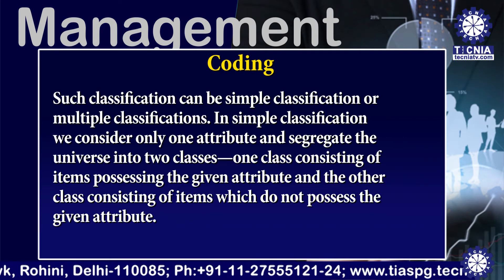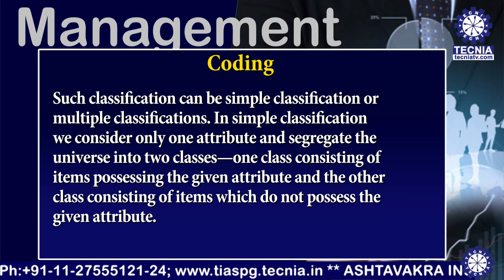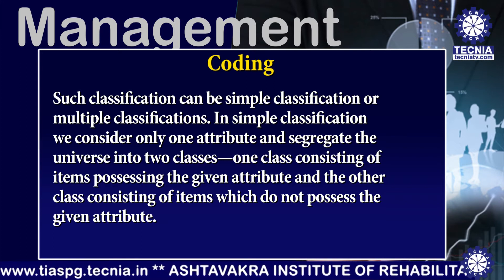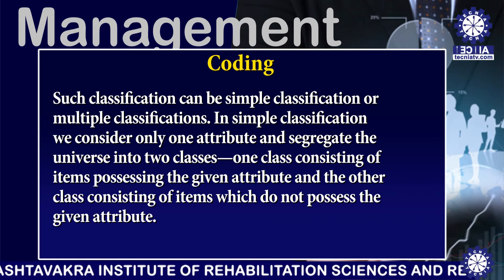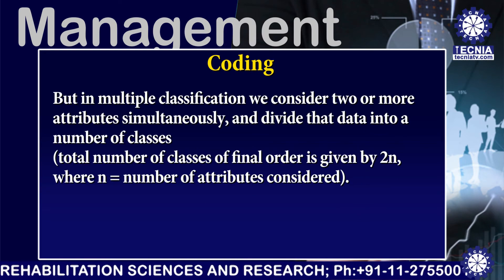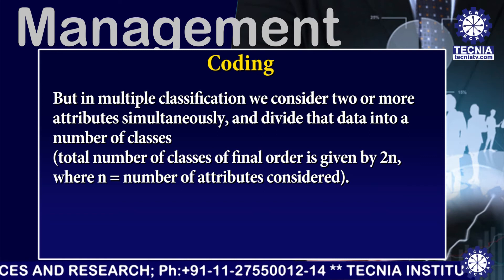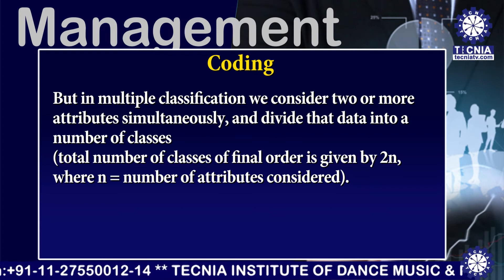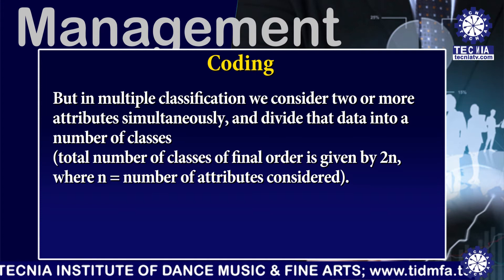Such classification can be simple classification or multiple classification. In simple classification, we consider only one attribute and segregate the universe into two classes — one class consisting of items possessing the given attribute, and the other class consisting of items which do not possess the given attribute. But in multiple classification, we consider two or more attributes simultaneously and divide the data into a number of classes; the total number of classes of final order is given by 2^N, where N equals the number of attributes considered.